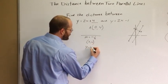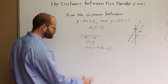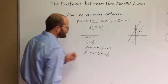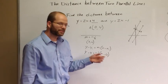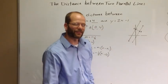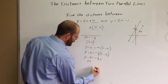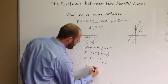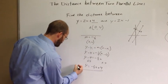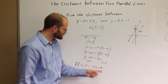Using point-slope form: y minus y₁ equals m times (x minus x₁). So y minus 4 equals negative one-half times (x minus 0). That 0 is convenient — it just goes away, which is another reason I use this y-intercept. Simplifying: y minus 4 equals negative one-half x. Add 4 to both sides: y equals negative one-half x plus 4. That is the equation of line AB.